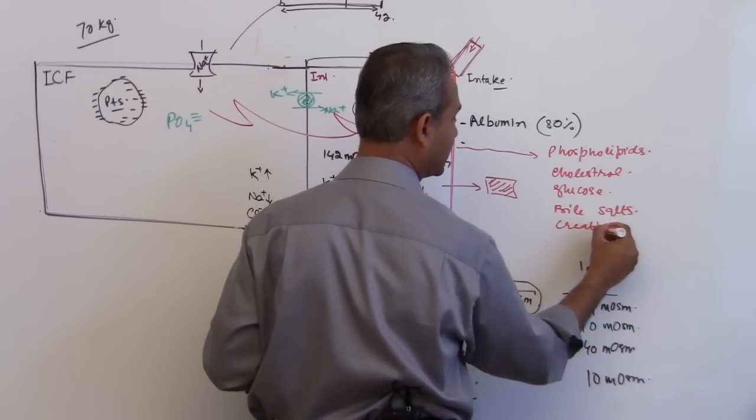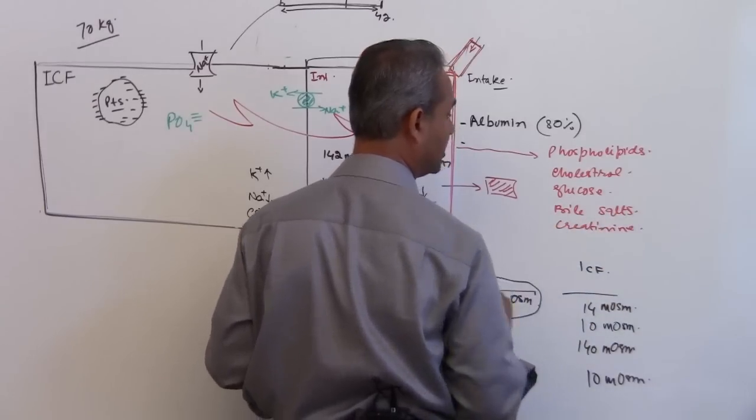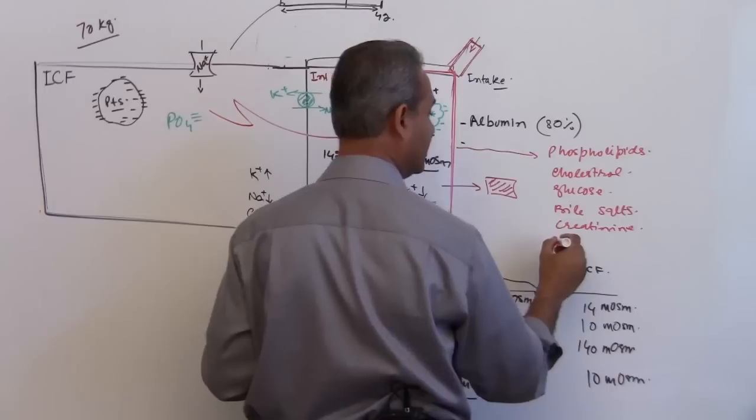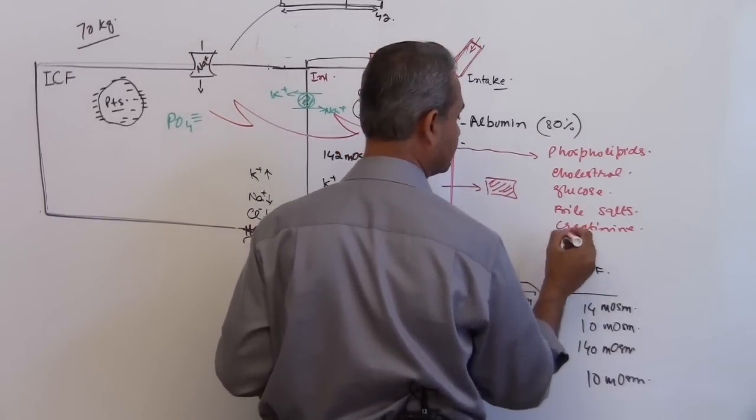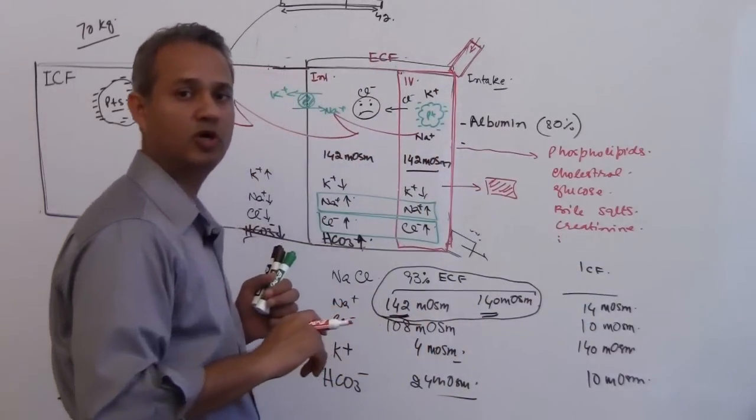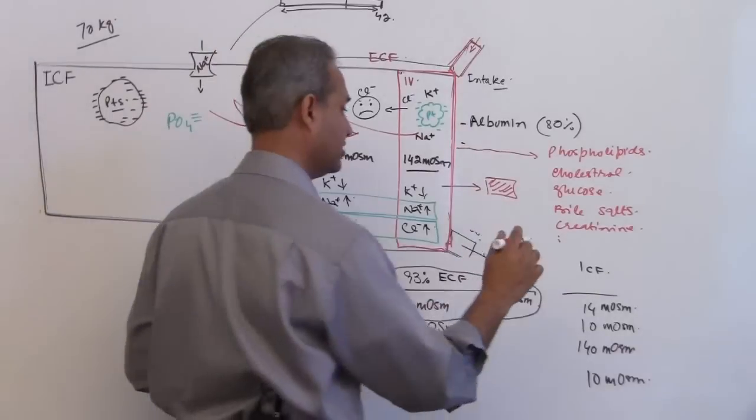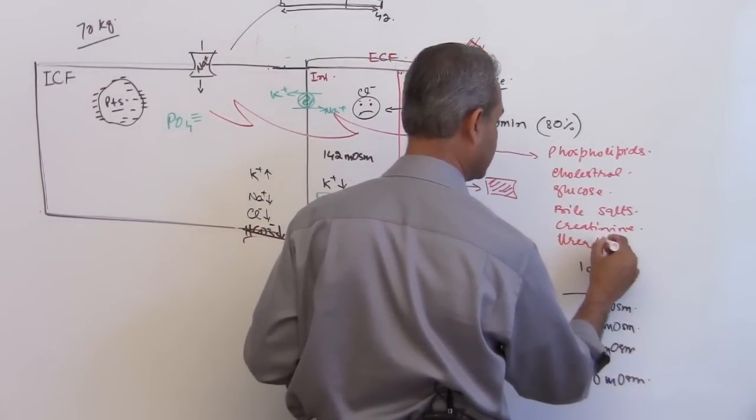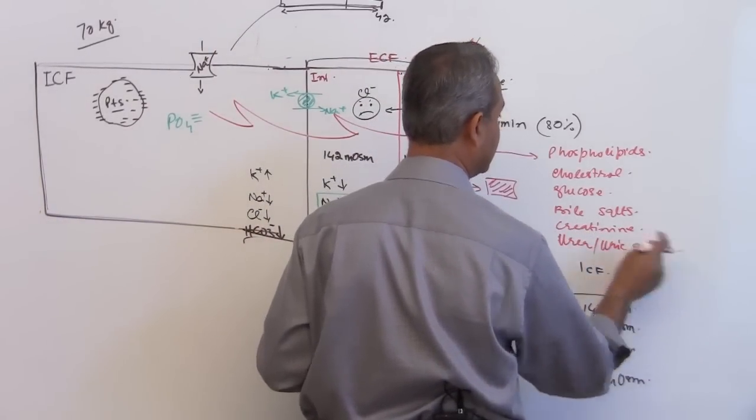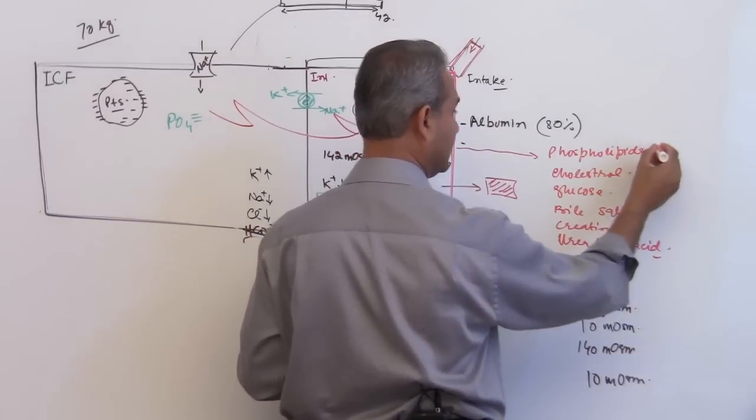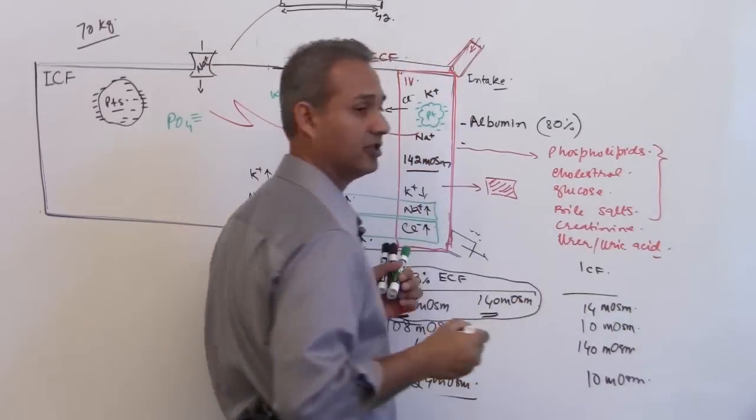Creatinine - remember creatinine, urea, blood urea nitrogen, and creatinine - other smaller molecules like uric acid and urea. But by far these are the majority of the things.